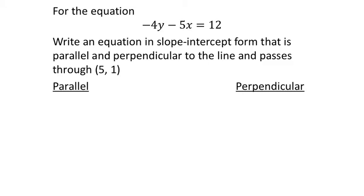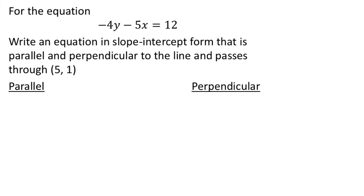On the assignment, some of the problems will start in slope-intercept form, but not all of them. This one I purposely did not start in slope-intercept form. It says write the equation for the line parallel and perpendicular to a given equation, but it has to go exactly through a given point. First, we need to change that equation into slope-intercept form.